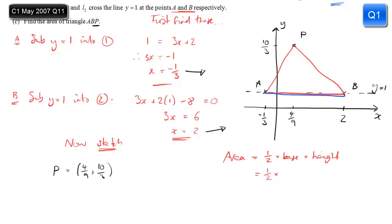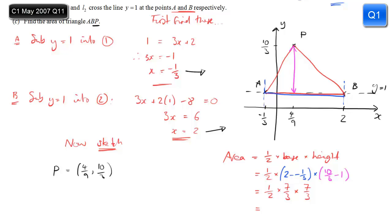The base runs along y equals 1 from x equals 2 down to x equals minus 1 third. Its length is 2 minus minus 1 third, which equals 7 thirds. The height is 10 thirds minus 1, which is 10 thirds minus 3 thirds, also 7 thirds. So the area is a half times 7 thirds times 7 thirds. Multiplying gives 49 over 18 square units.